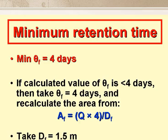The minimum retention time in a facultative pond is 4 days, so if our calculated value of θf is less than 4 days, we have to use a value of 4 days, and recalculate the area, as shown on the slide, assuming a depth of 1.5 metres.